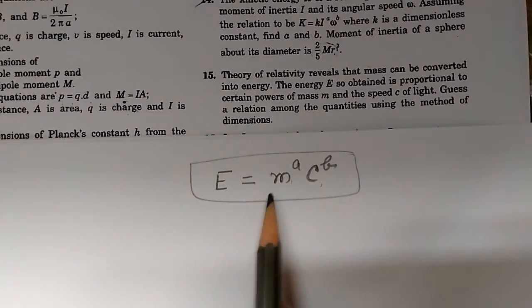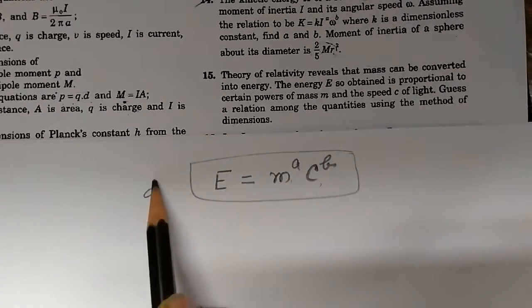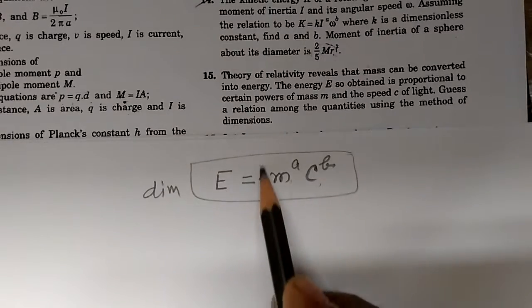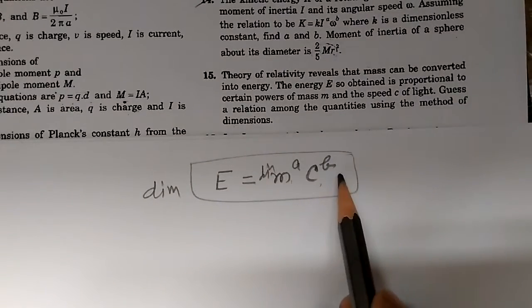Now we need to do the dimensional analysis of this. We write dimensions of E equals dimensions of M to the power of A and C to the power of B.